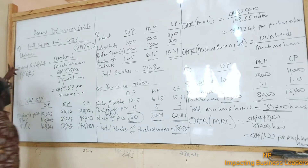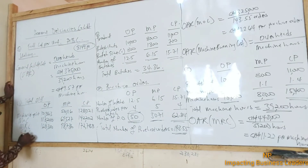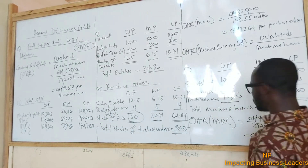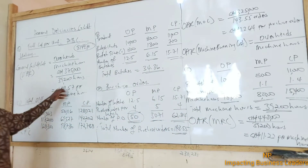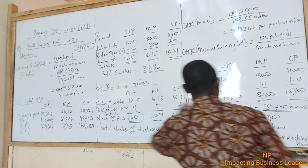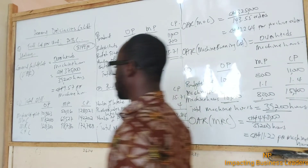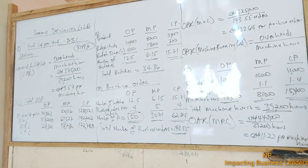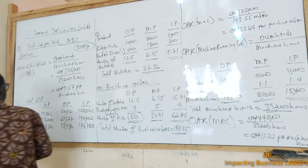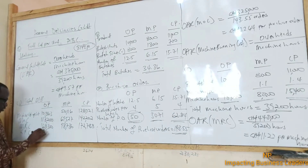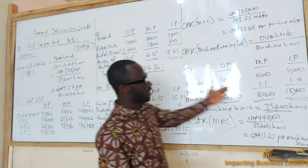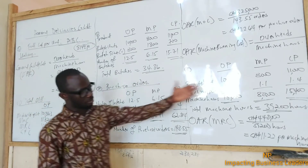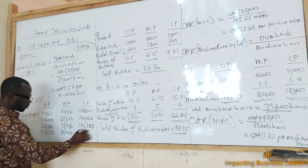Then the last cost pool is general facility cost. What is the rate? 9.57 per machine hour. So we multiply respectively: 9.57 times 15,000 for OP gives 143,550. 9.57 times 8,800 for MP gives 84,216. And 9.57 times 15,400 for CP gives 147,378. That is also based on machine hours.